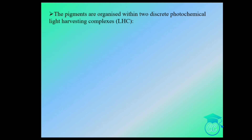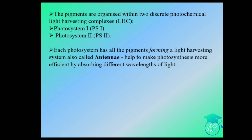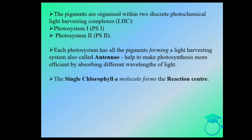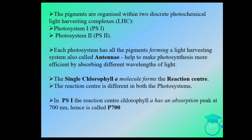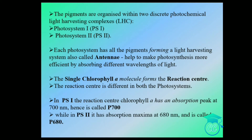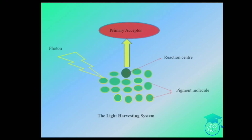In each photosystem, all the pigments form the light-harvesting system called antennae, making photosynthesis more efficient by absorbing different wavelengths of light. A single chlorophyll a molecule forms the reaction center, which is different in both photosystems. In PS1, the reaction center chlorophyll a has an absorption peak at 700 nm and is called P700. In PS2, the absorption maxima is at 680 nm and it is called P680.